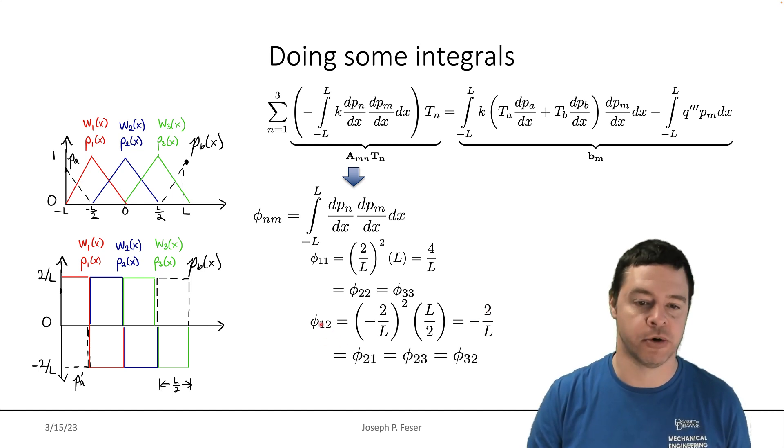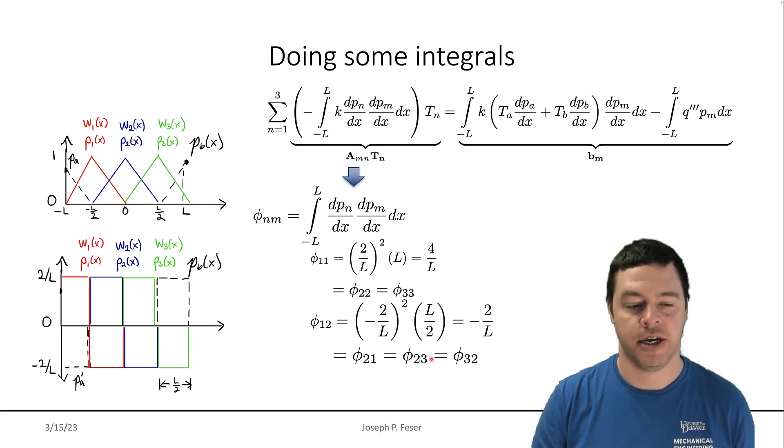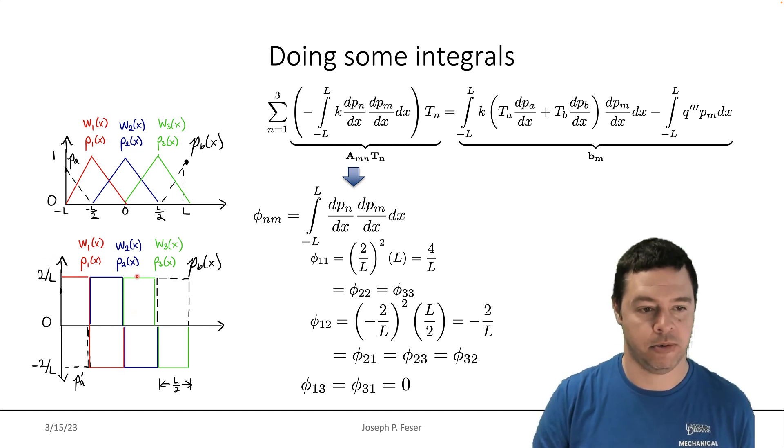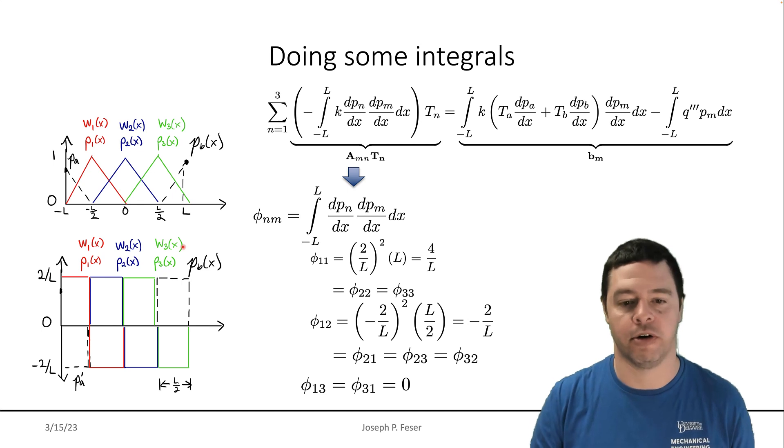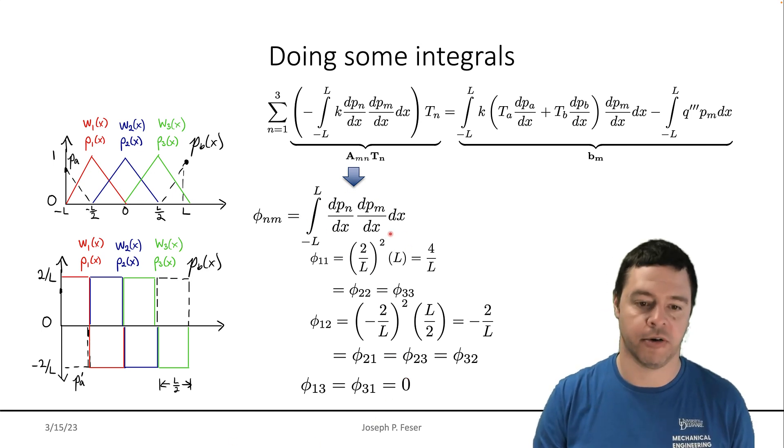And that turns out to be true for all of the off diagonals, except the ones that are separated by quite a bit. So, for example, this red one has no overlap with this green one. So one and three don't overlap at all. And similarly, three and one don't overlap at all. And so when I do that integration, I get zero.